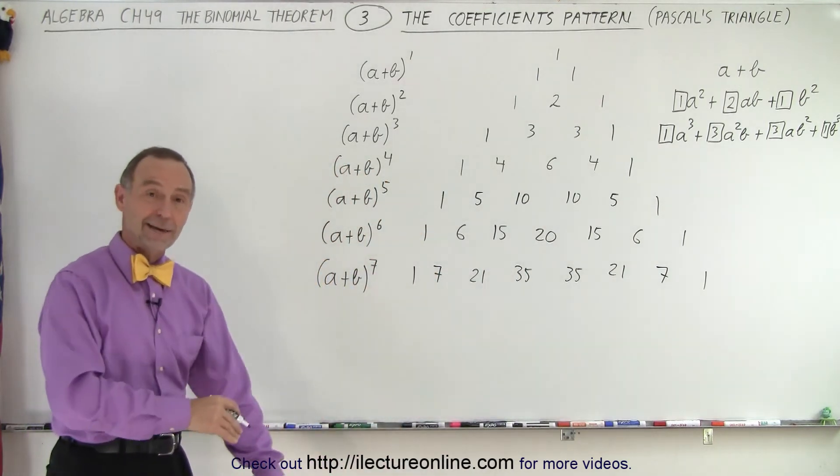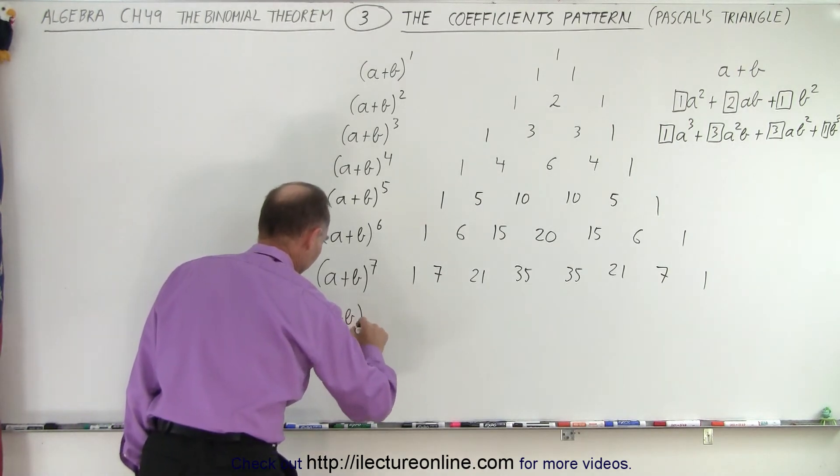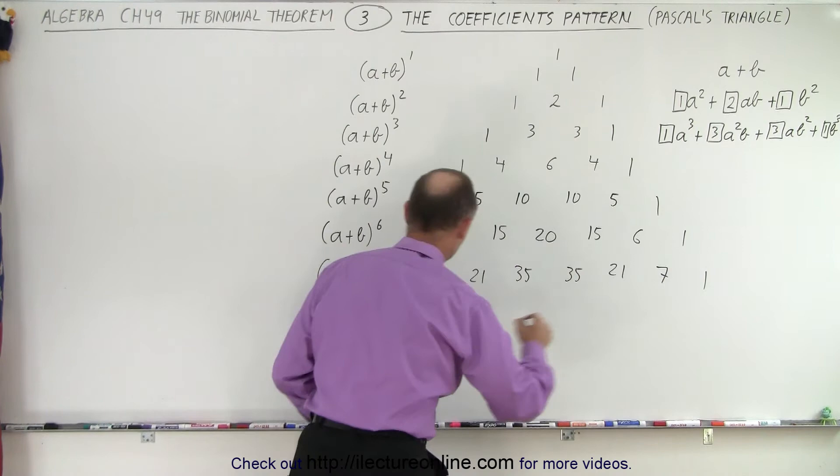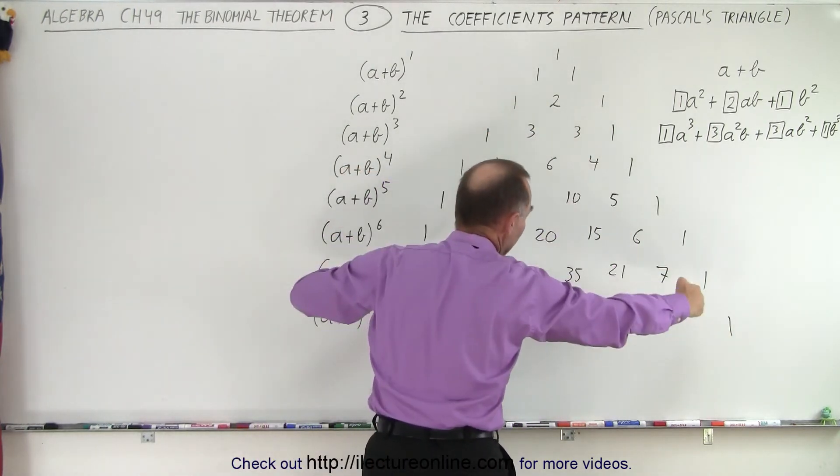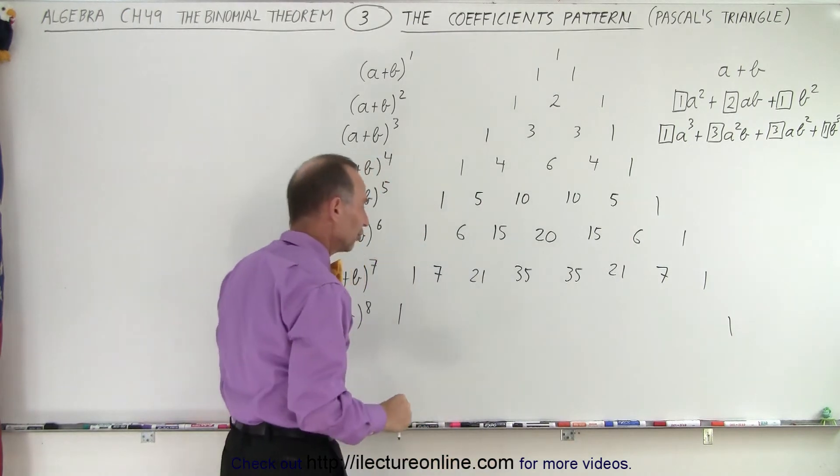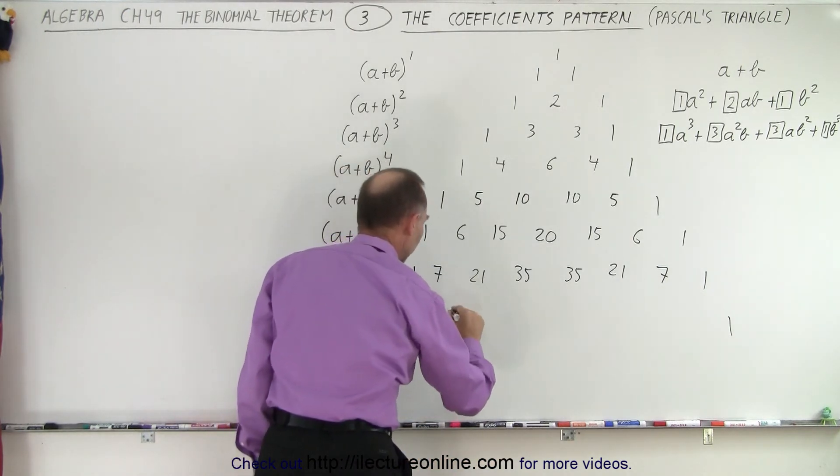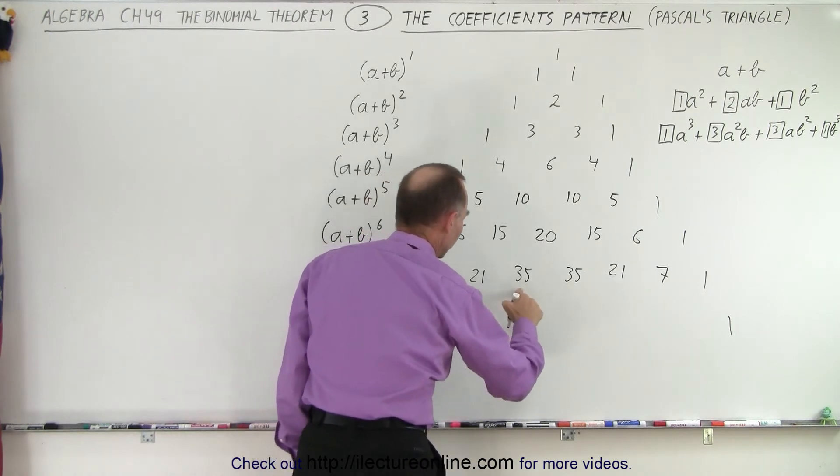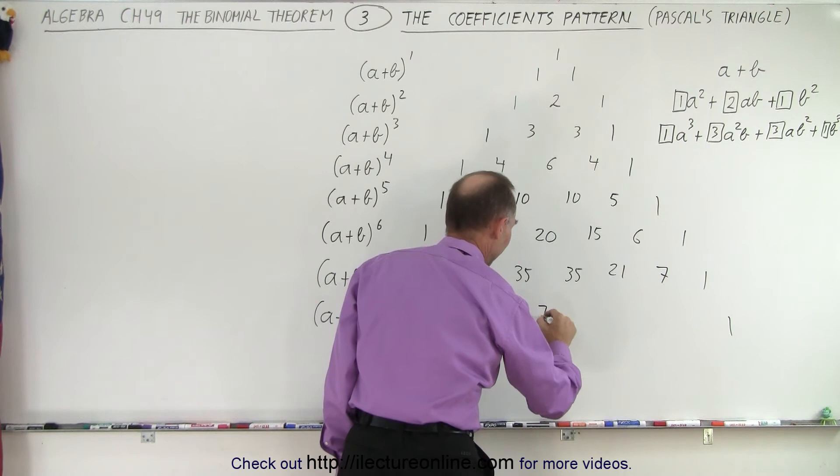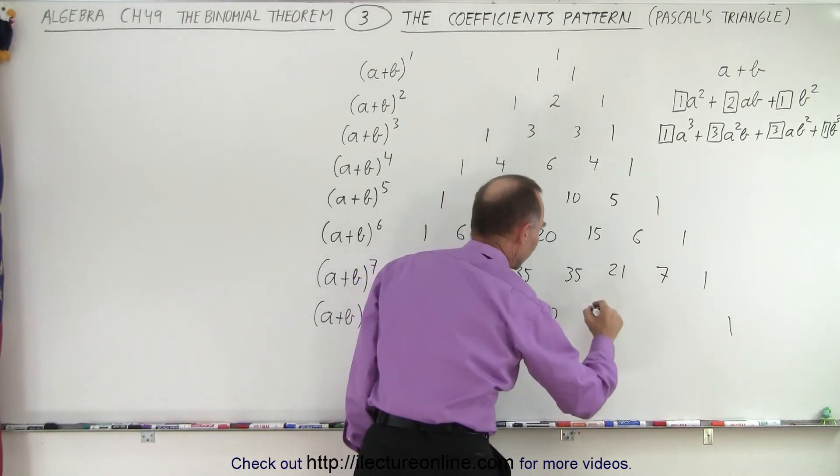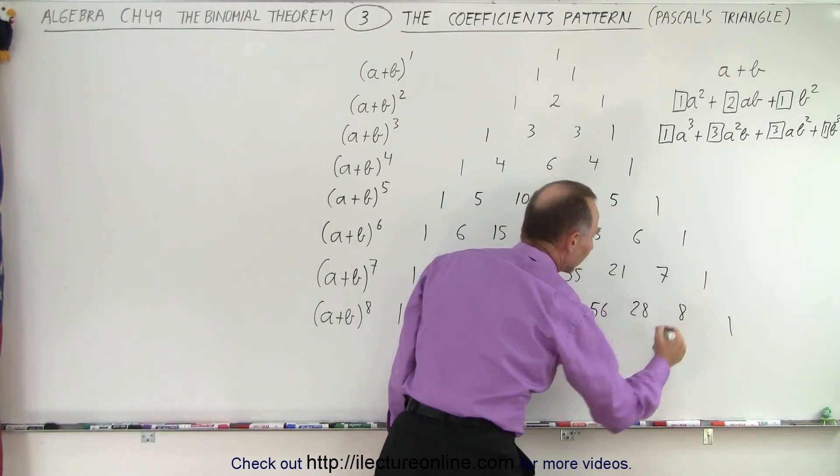It's so fun. I just like to keep going. Let's do the next one. How about a plus b to the eighth power? Well, again, we move the ones out. And notice that's why we call it a triangle, in particular Pascal's triangle. So 1 plus 7 gives us 8. 7 plus 21 gives us 28. 21 plus 35, that would be 56. 35 plus 35, that's 70. 35 plus 21, that would be 56. 21 plus 7, 28. And 7 plus 1 gives us 8.